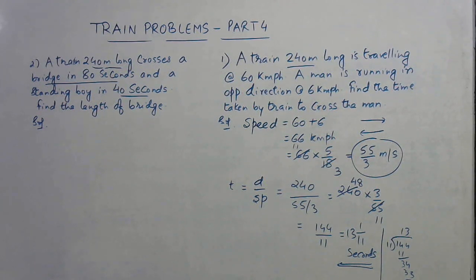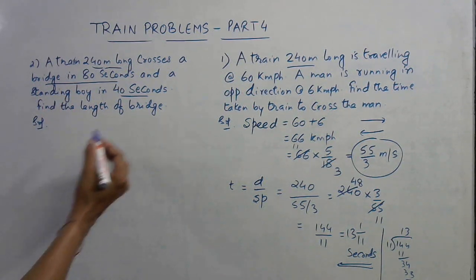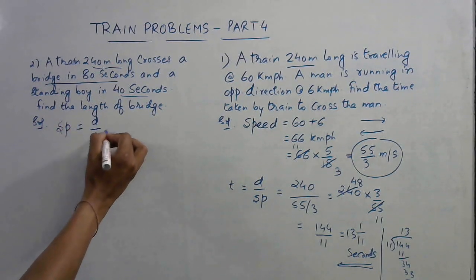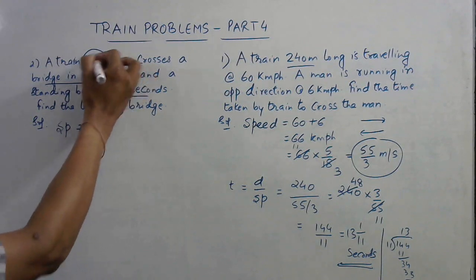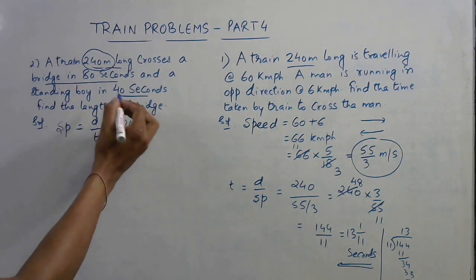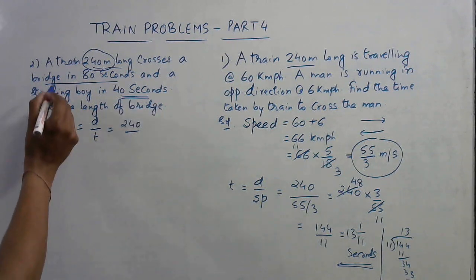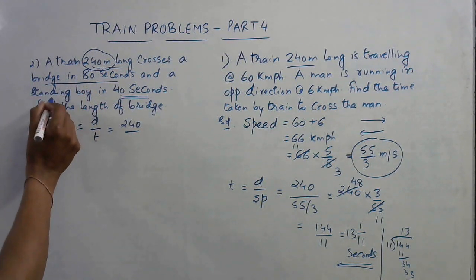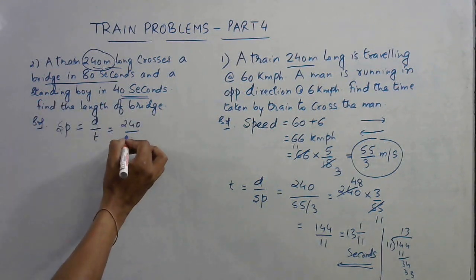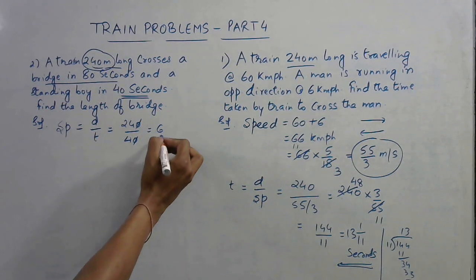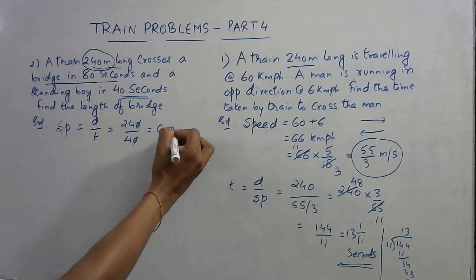In this case the speed is obviously distance by time, and the distance is the length of the train, that is 240, and the time taken to cross the boy is 40 seconds. First we will be using the data relating to the boy, so time is 40 seconds to cross the boy. This is 6 meters per second. So this is the speed of the train.